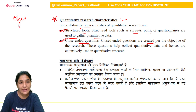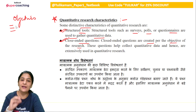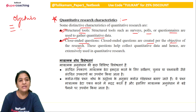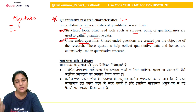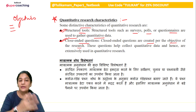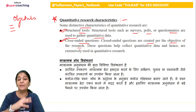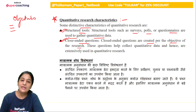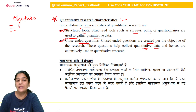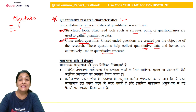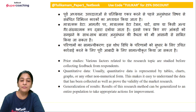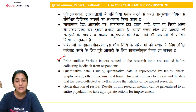Closed-ended questions are created based on the objectives of the research. We identify specific objectives for our research and design questionnaire items accordingly. The answers to these questions fall into yes/no or multiple-choice options — there is no scope for description. These closed-ended questions serve as our tool to collect quantitative data, which we then incorporate into our research.